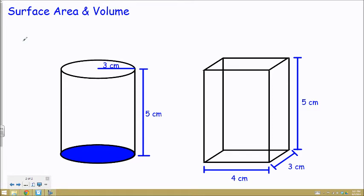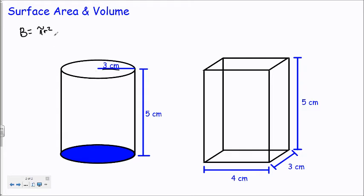So since my base is a circle, my base area will be equal to the area formula for a circle, which is pi times the radius squared, and the radius is given to me to be 3 centimeters. So in this case, my base area will be 9 pi centimeters squared.